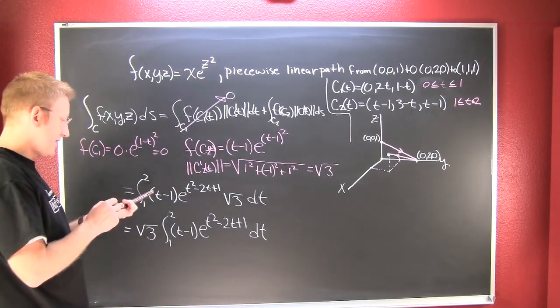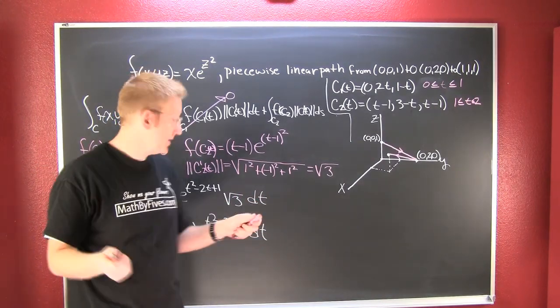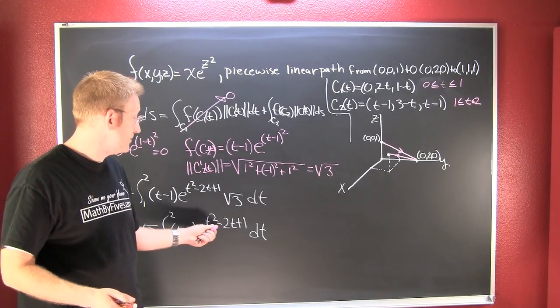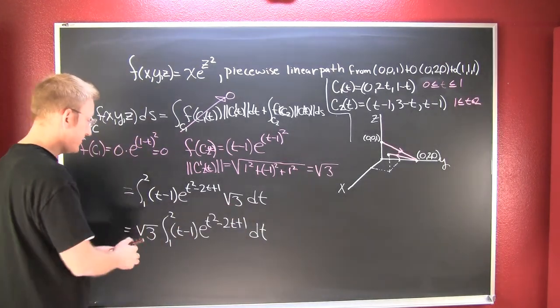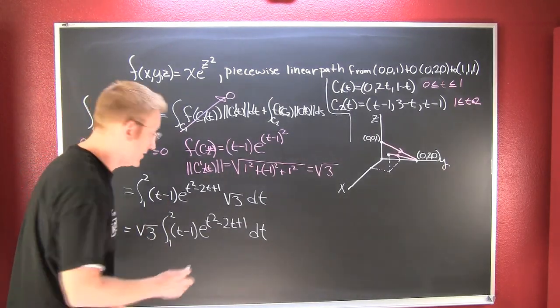Here you're going to see that you're going to have a u-substitution, right? You're going to let u be this guy, then the derivative is 2t-2. Factor out that 2 and put it out front and integrate it. I think you got it from here. You finish.